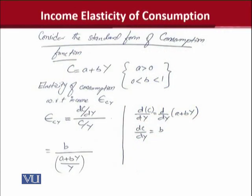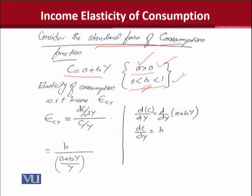We have taken a standard form of the consumption function, which is C equals A plus BY. A is the autonomous consumption and B is the marginal propensity to consume. In parametric restrictions, A is positive, and B is also positive but a fraction between 0 and 1.